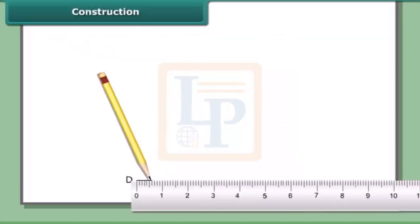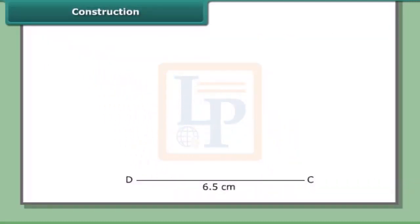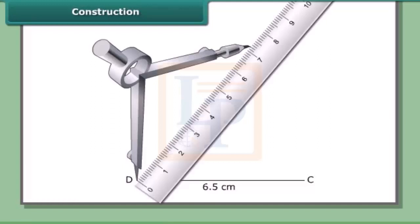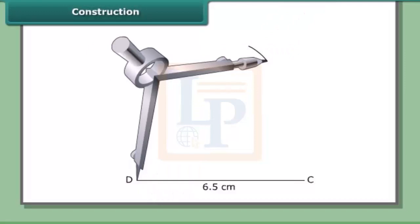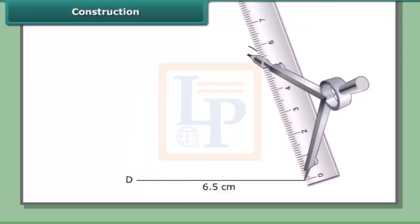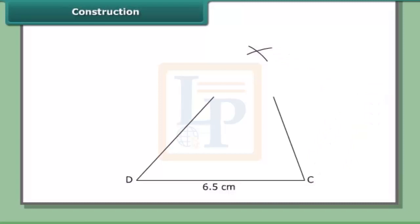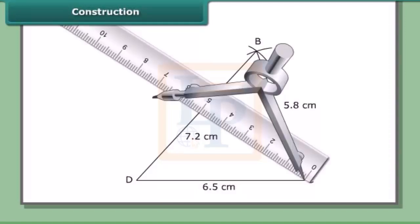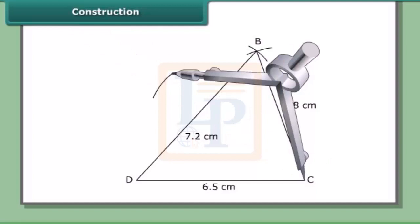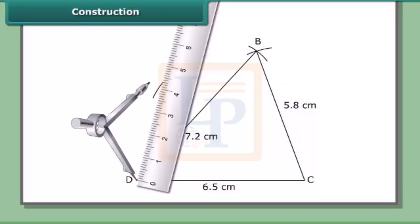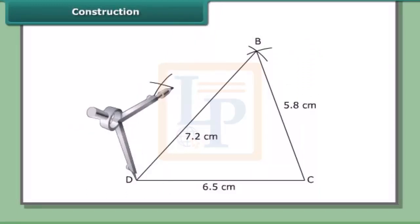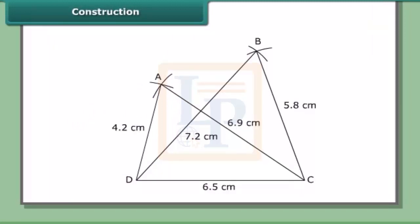Constructing BCD: draw DC = 6.5 cm. With D as center and radius 7.2 cm, draw an arc. With C as center and radius 5.8 cm, draw another arc to cut the previous arc at B. Join CB and DB. Constructing ACD: with C as center and radius 6.9 cm, draw an arc on the same side of DC. With D as center and radius 4.2 cm, draw another arc to cut the previous arc at A. Join CA, DA, and AB. Then ABCD is the required quadrilateral with diagonals AC and BD.